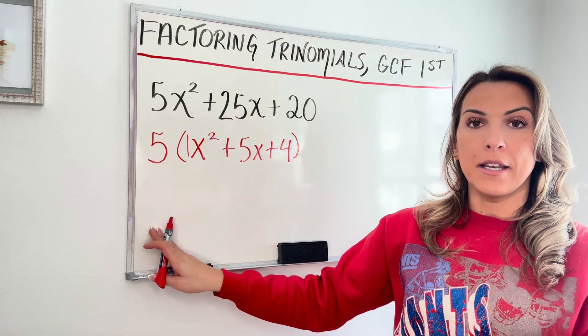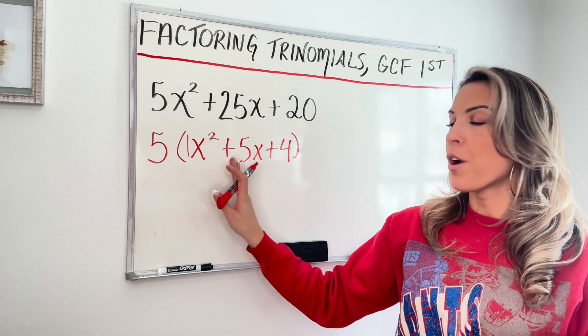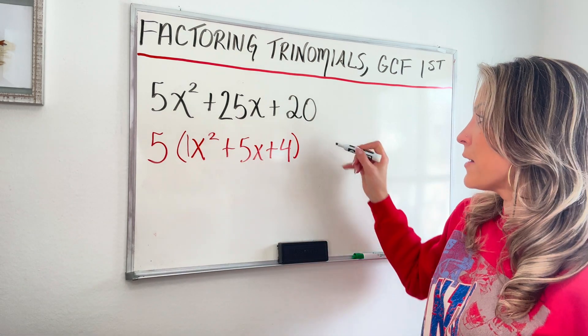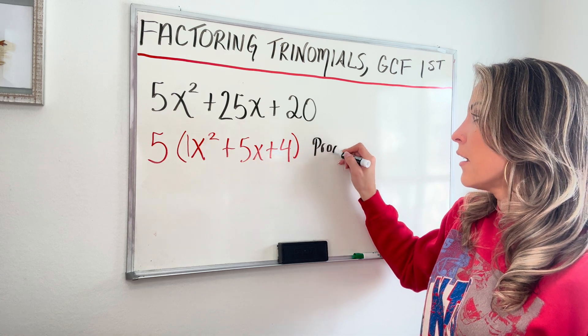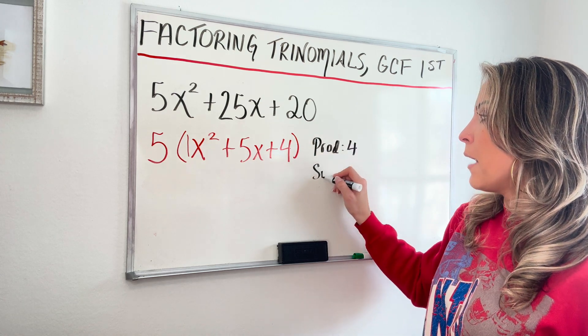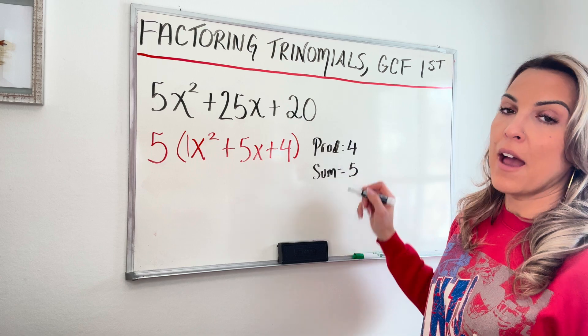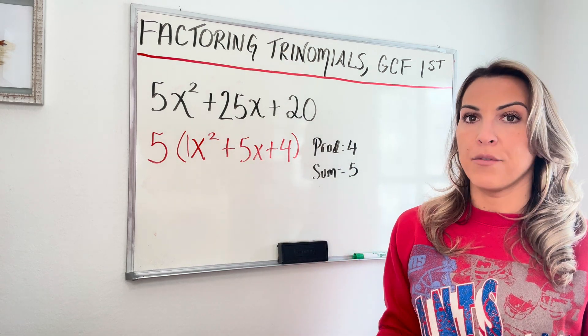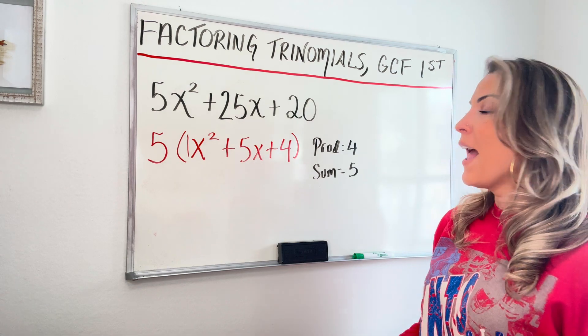It's going to just kind of keep on coming down in our work to our answer. And we're going to go ahead and do product and sum inside this parentheses. So for the expression inside the parentheses, my product is four and my sum is five. So I'm looking for two numbers that multiply to four and add to five.